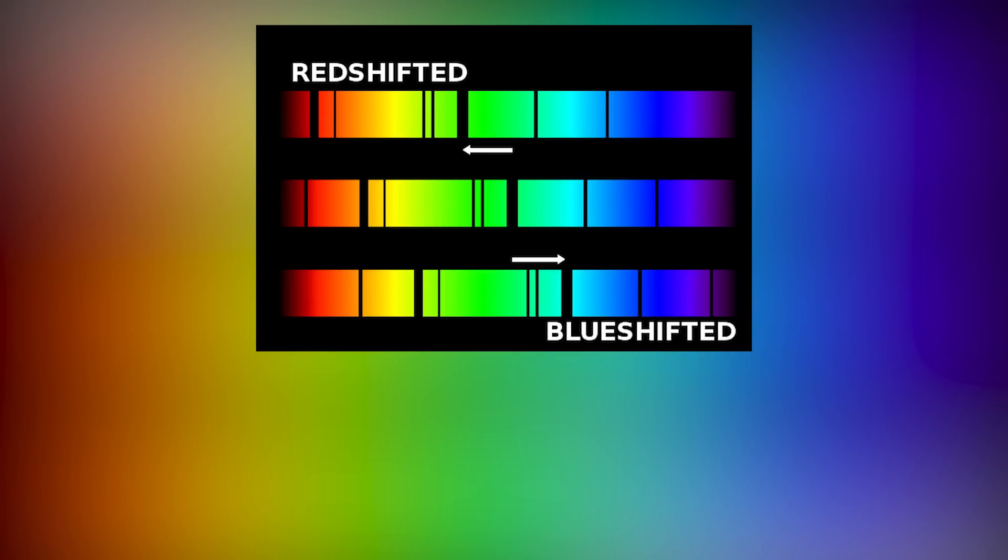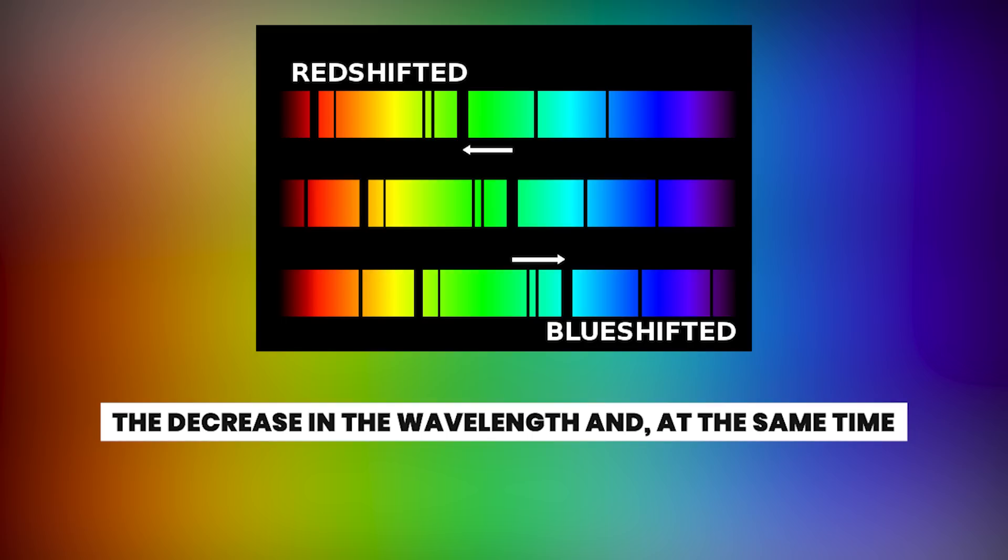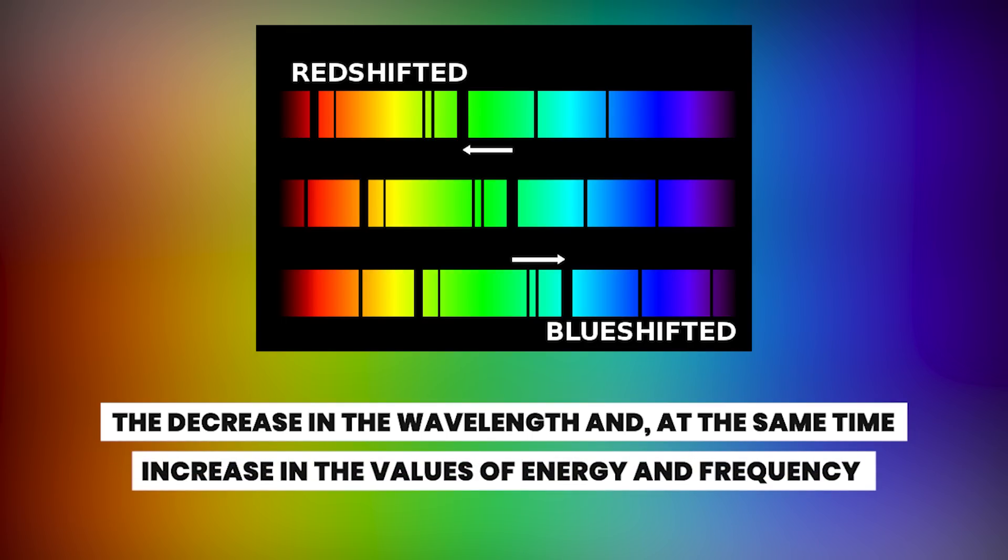The other way effect of redshift is a blue shift. It is the reverse process. The decrease in the wavelength and, at the same time, increase in the values of energy and frequency.